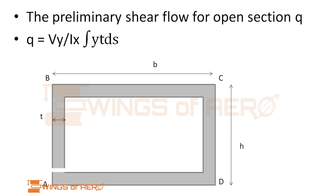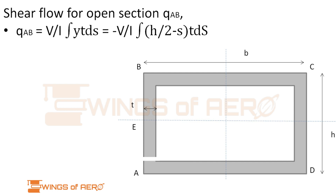Now the preliminary shear flow for the open section is given by q = (Vy / Ixx) × integral of y·t·ds. Implementing this formula for q_AB: along edge AB the wall is very thin so we ignore the thickness. The variable y is the distance from the centroid — downward of the centroid is negative, upward is positive. Taking an arbitrary section at distance s from the free end, the distance from the centroid to that point is (−h/2 + s).